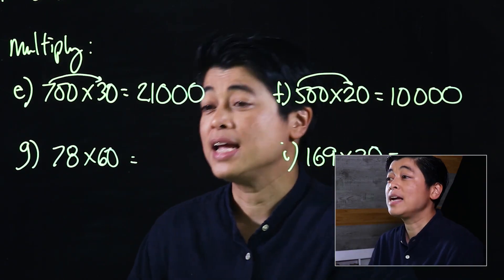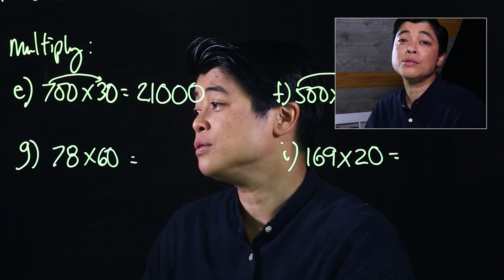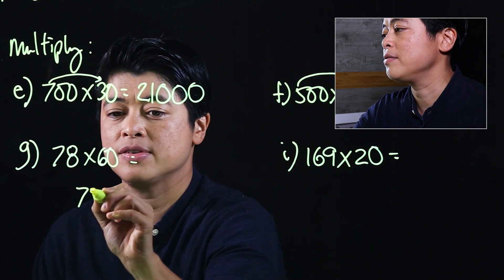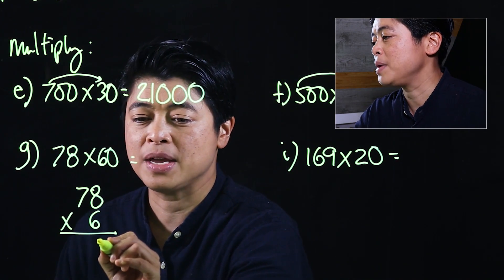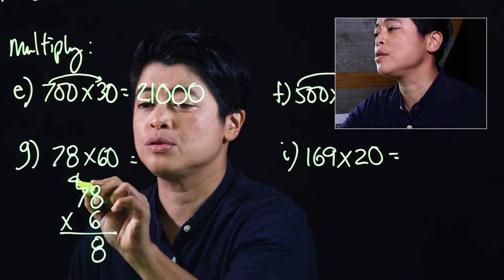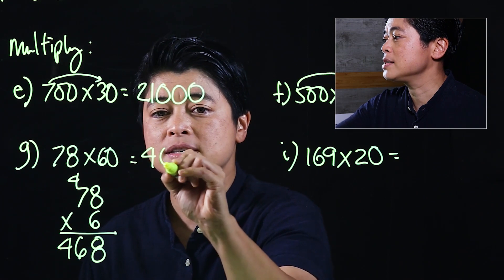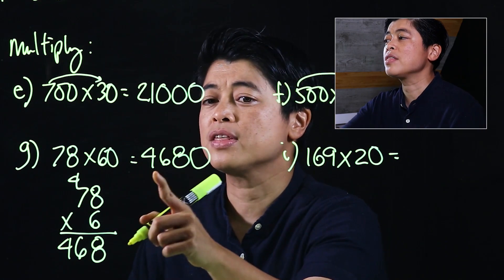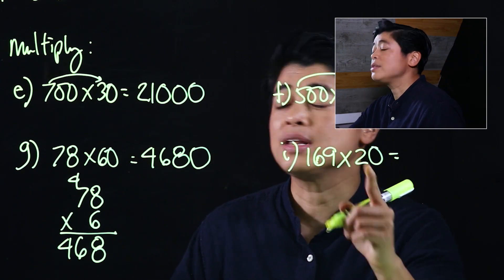However, the next two problems are harder to do mentally. We work without the zero, so that means 78 times six. Six times eight is 48, and six times seven is 42 plus four is 46. So the result is 468, and with one zero appended, the answer is 4,680.